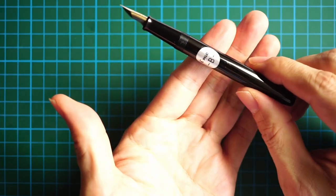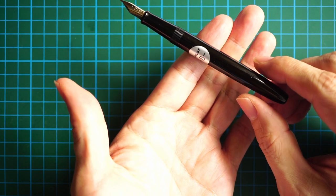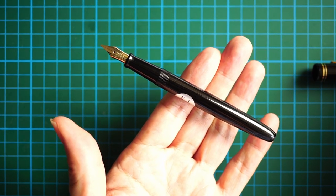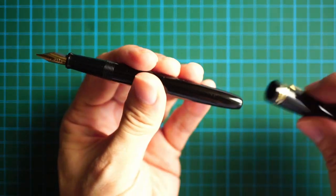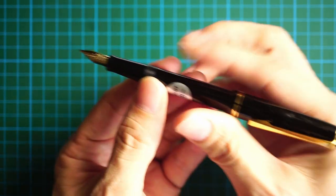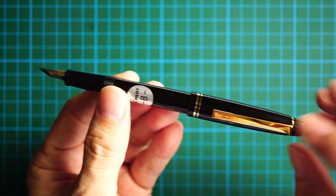Balance-wise, because this is a cartridge converter, it's pretty much balanced bang on in the middle of the pen. And if you post it, as you would probably expect, it will be kind of back heavy because of the weight of the cap.